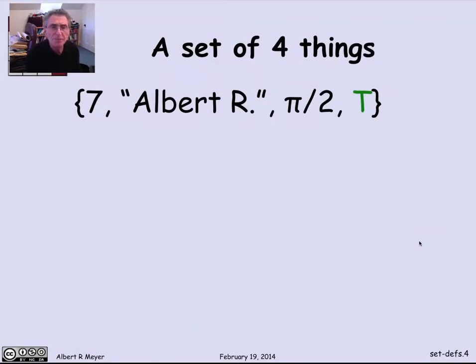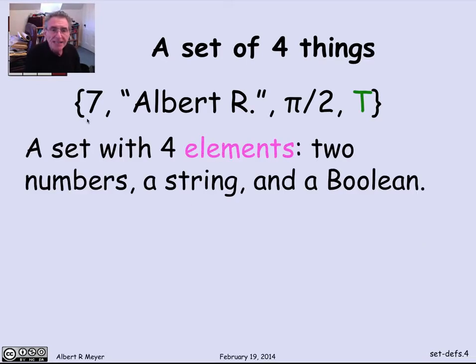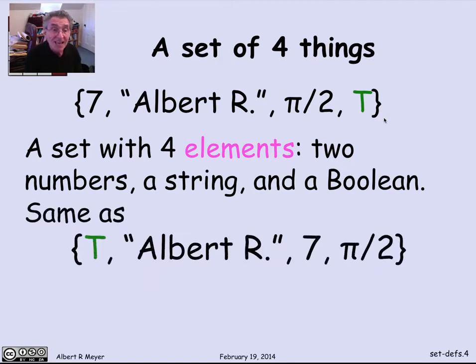Let's look at an example to pin things down. Let's look at this set of four things: it's got two numbers, pi over 2 and 7, a character string in quotes, Albert R, and the Boolean value true. So those are the four different things in it. They're of mixed type. And you might not like to have a mixed type like this in a programming language, but mathematicians don't worry about such things very much.